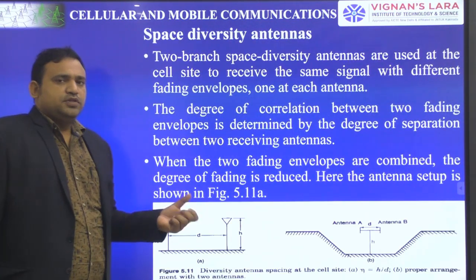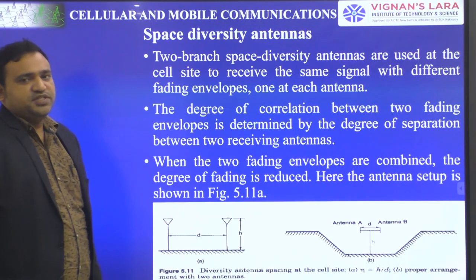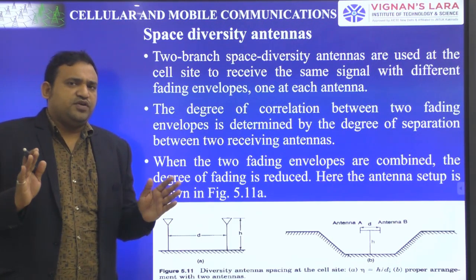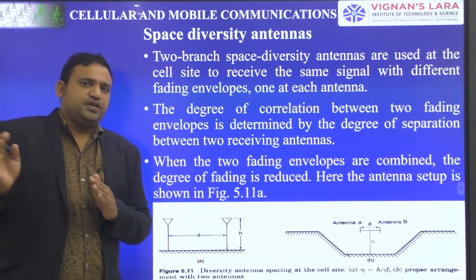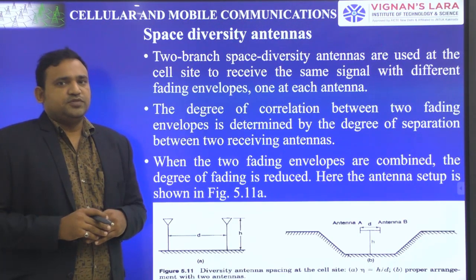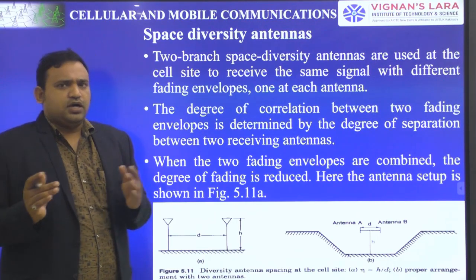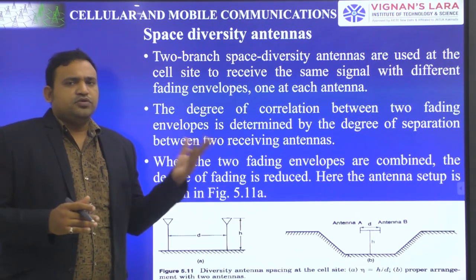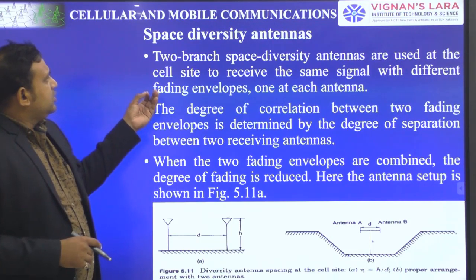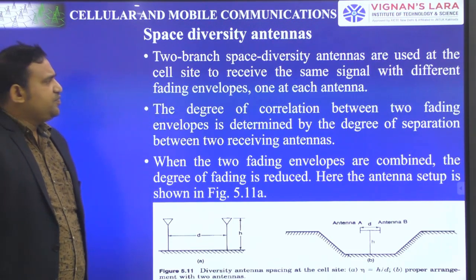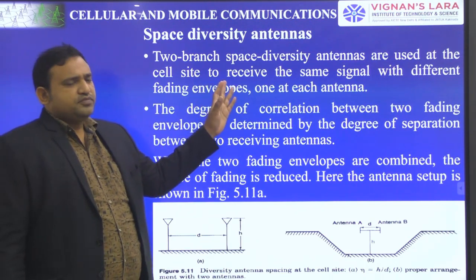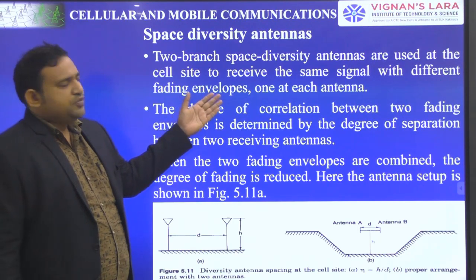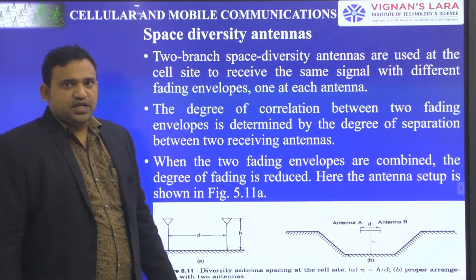Coming to the first topic about space diversity antennas. We have already studied about diversity receivers — that is different. These are about space diversity antennas, so if you want to compare, just go to the diversity receiver once, then come to space diversity antennas. In space diversity antennas, there exist two-branch space diversity antennas which are used at the cell site to receive the same signal.